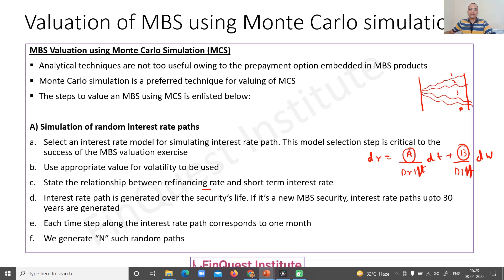Also critical is defining the relationship between the refinancing rate and the short-term interest rate, because the refinancing rate is related to prepayments. As part of this step, we simulate the interest rate path over the entire security's life — up to 30 years for a new MBS security. Each path is split into individual sections, with every time step corresponding to one month. We generate N such paths as shown in the diagram, often using parallel processing or parallel computing, which can be done through Python or any other scripting tool that supports parallel processing.